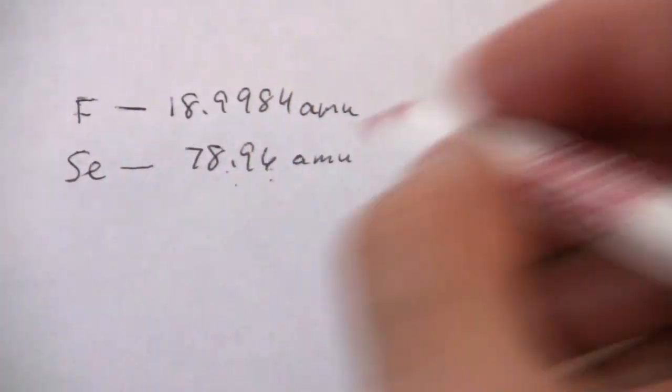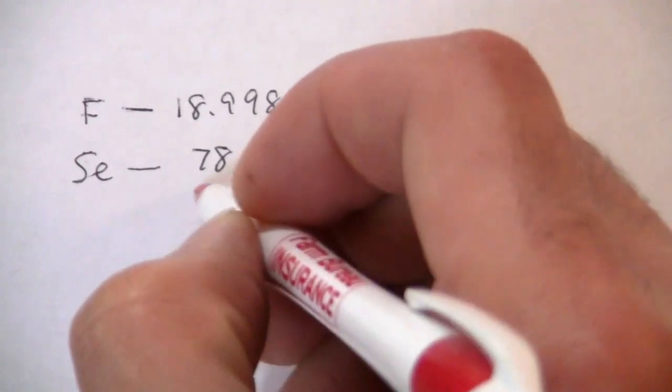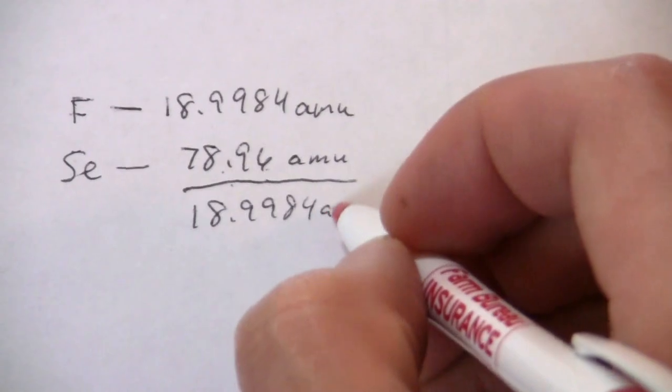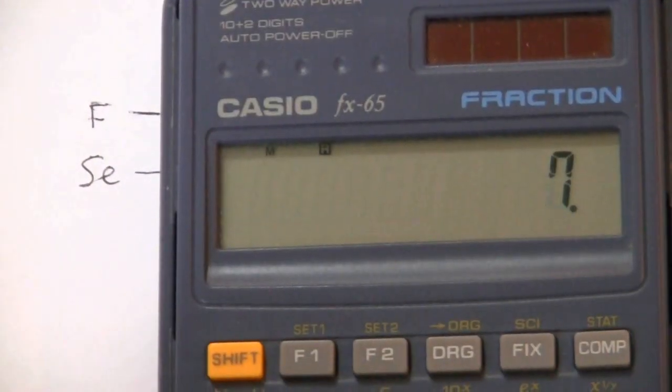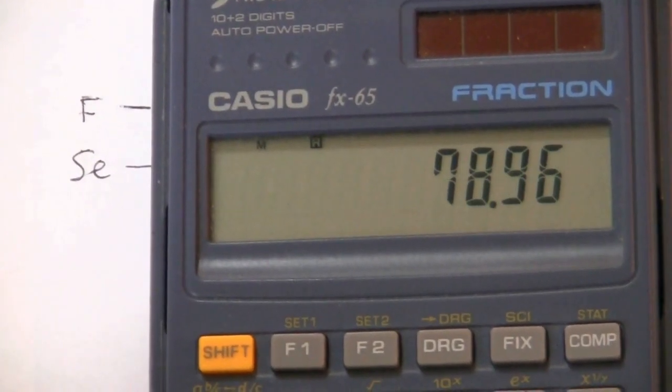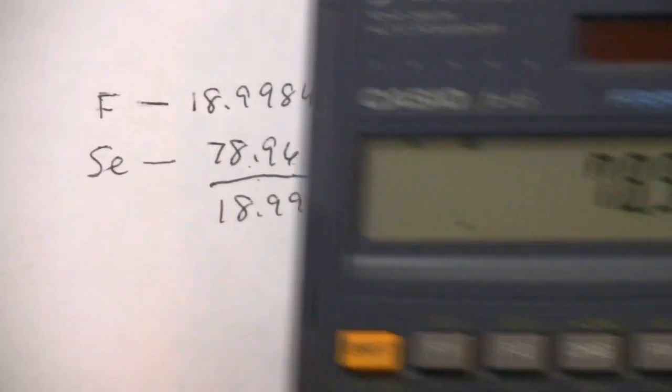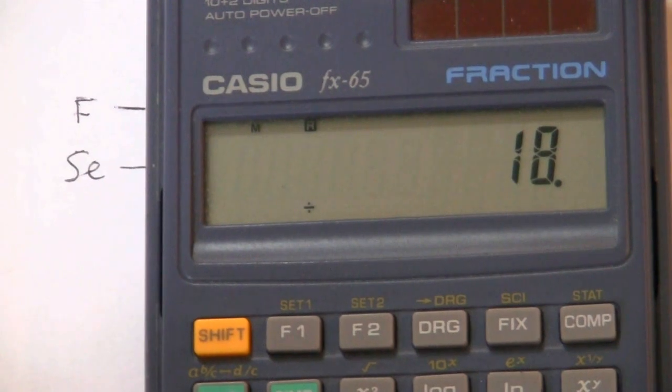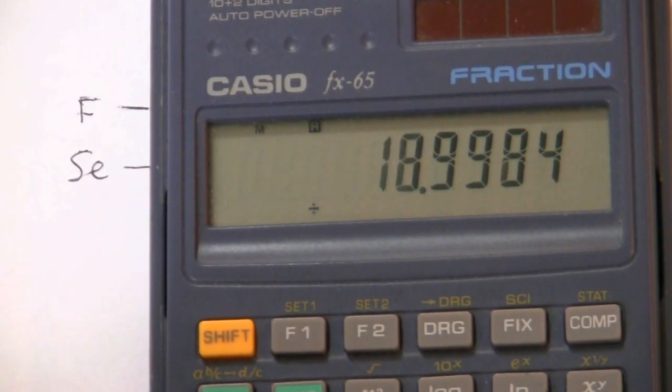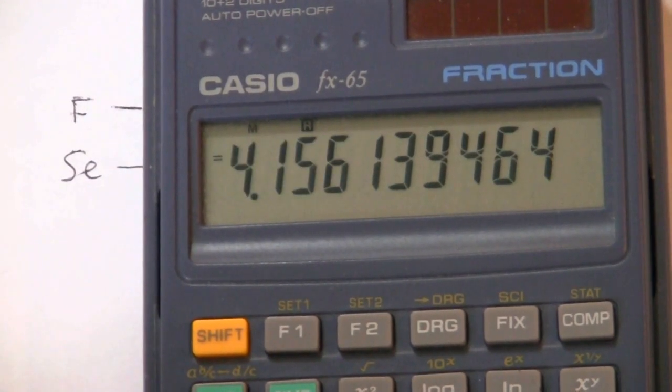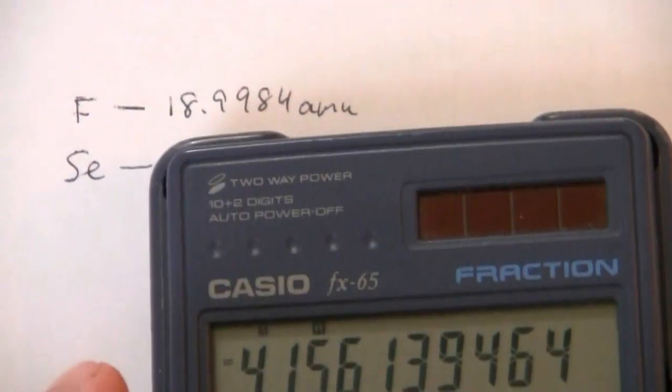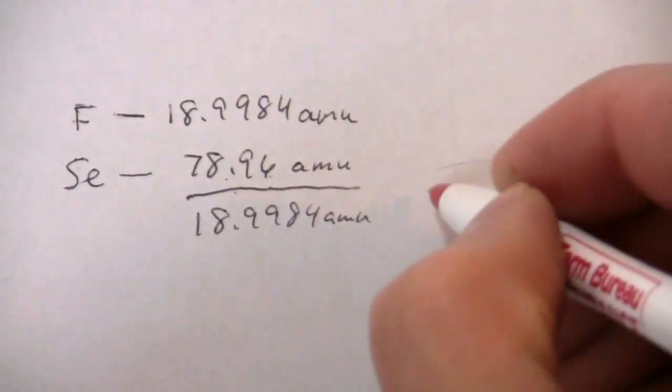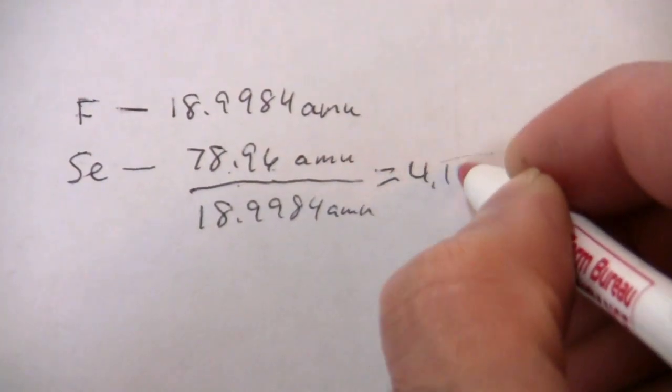So the way we'll do this is take 78.96 and divide that by 18.9984. So we have 78.96 divided by 18.9984, and we get 4.156.